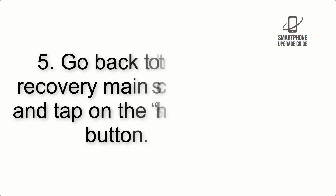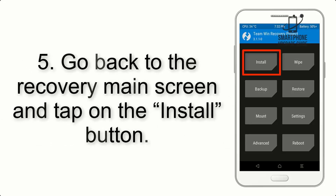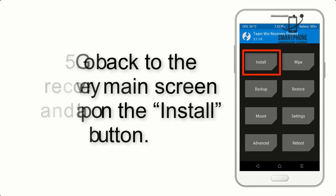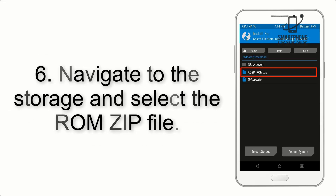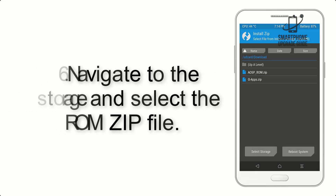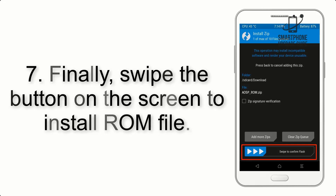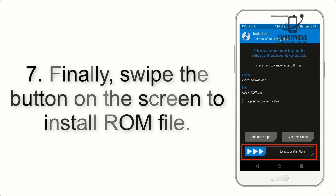Step 5: Go back to the recovery main screen and tap on the Install button. Step 6: Navigate to the storage and select the ROM zip file. Step 7: Finally, swipe the button on the screen to install the ROM file.